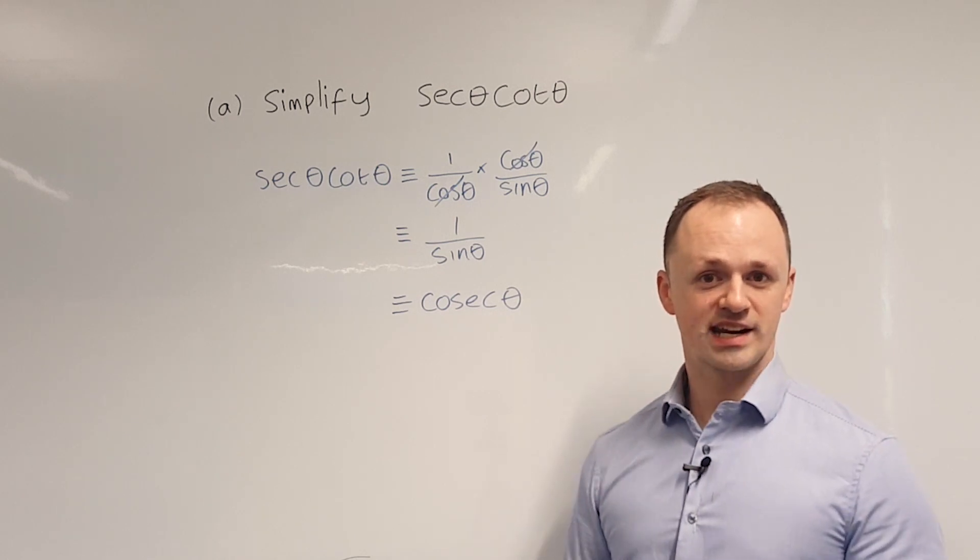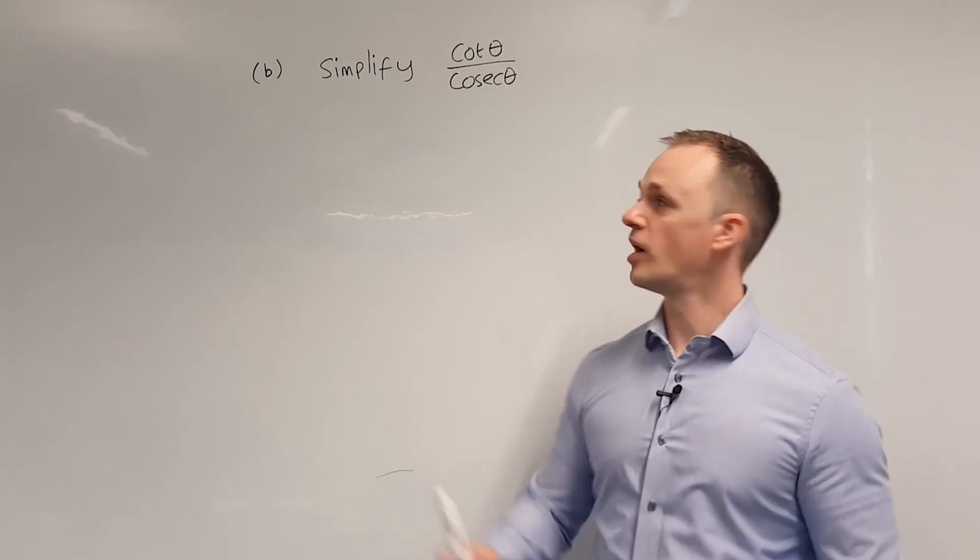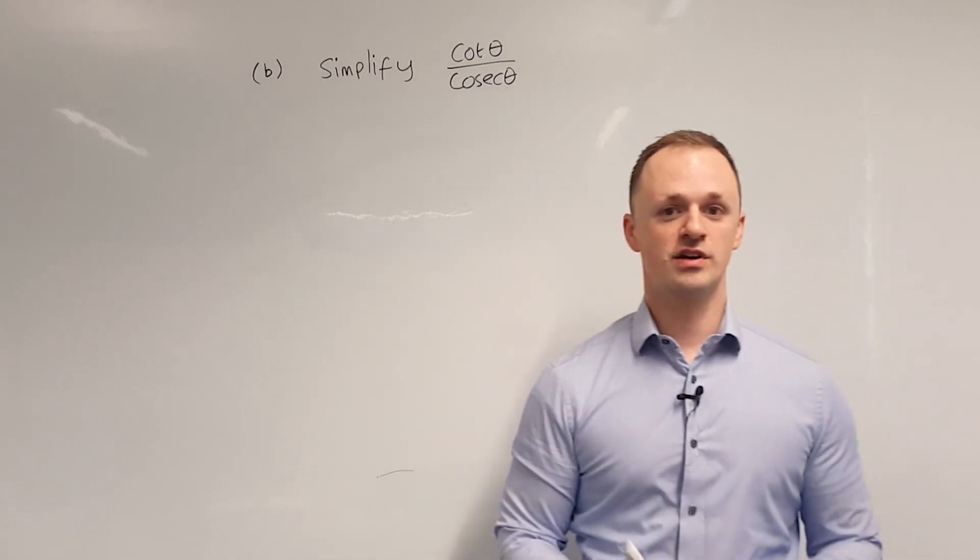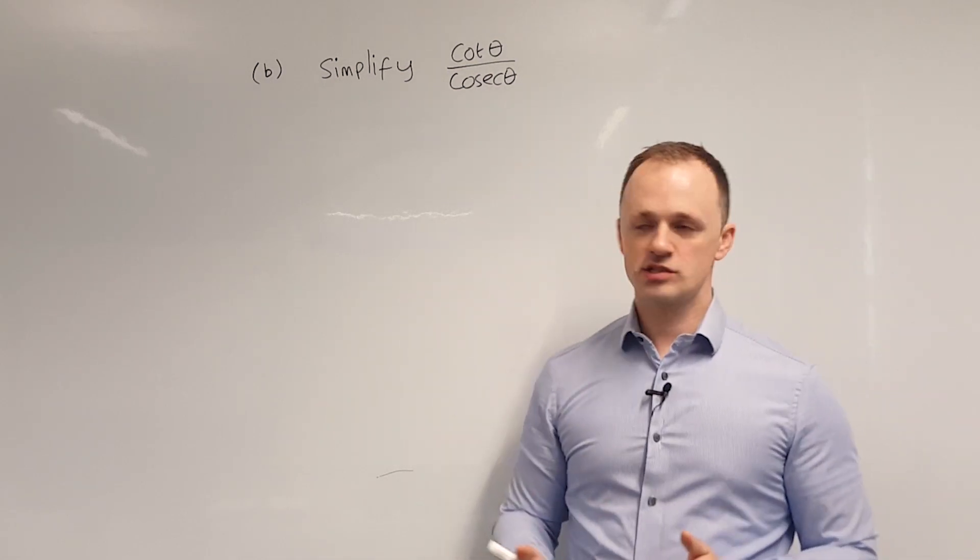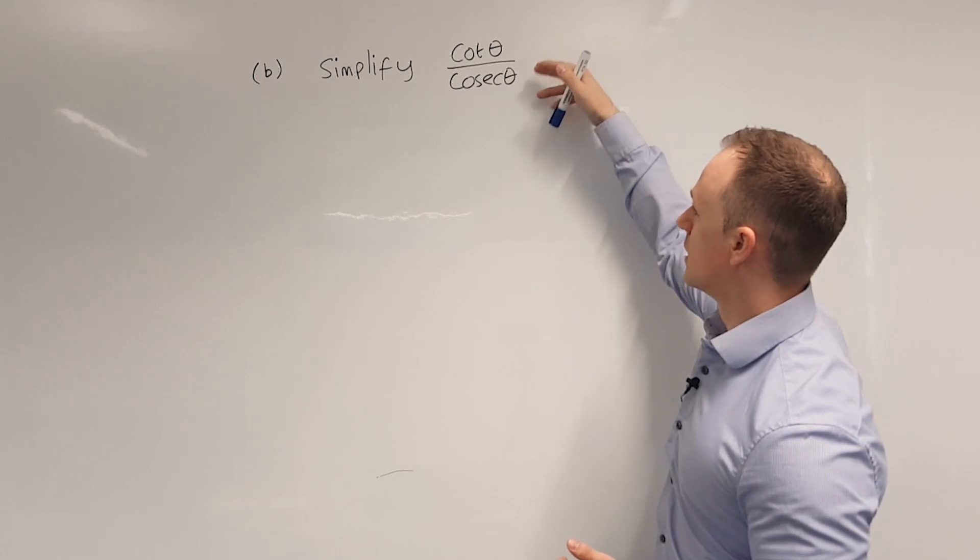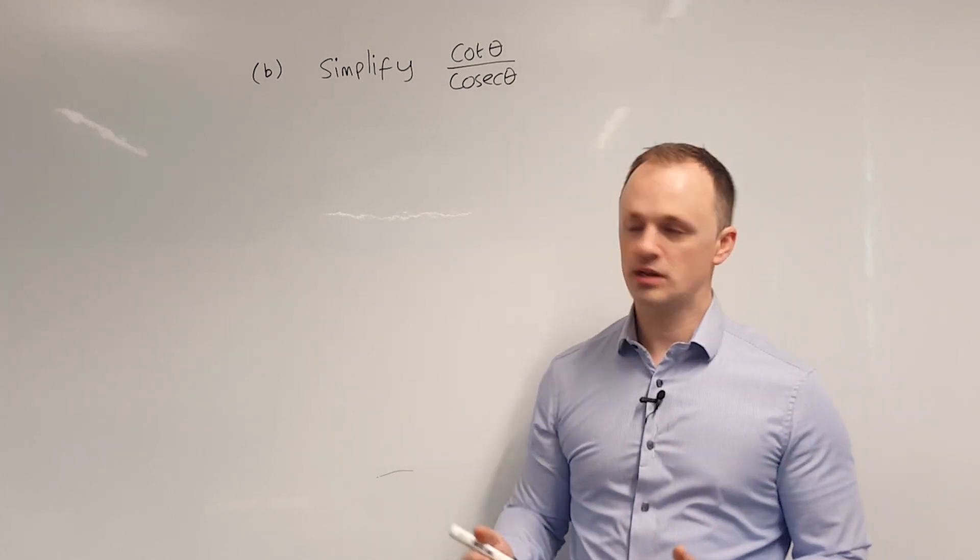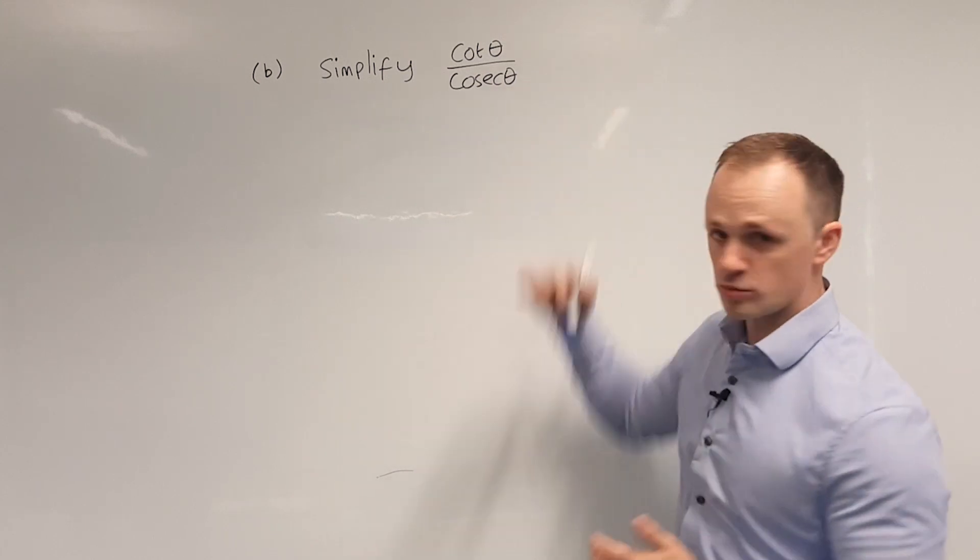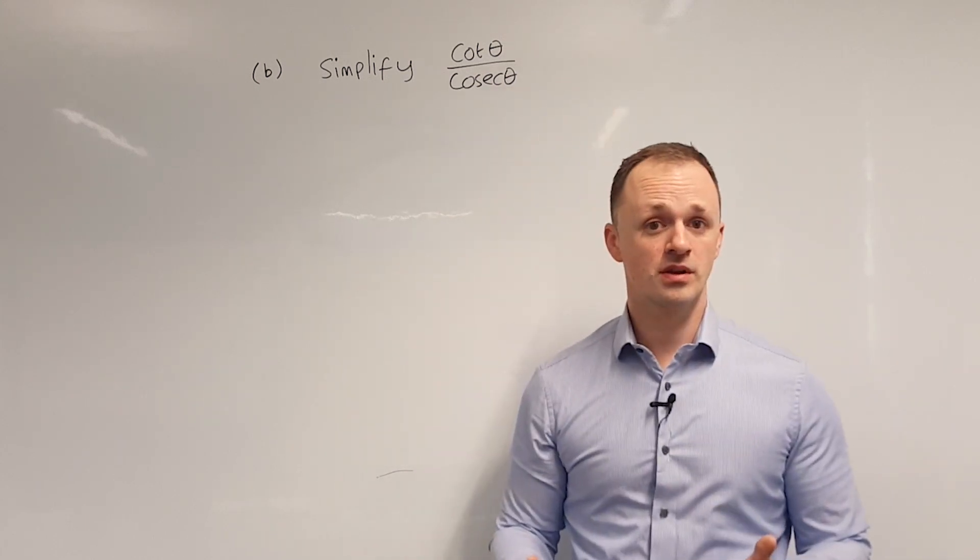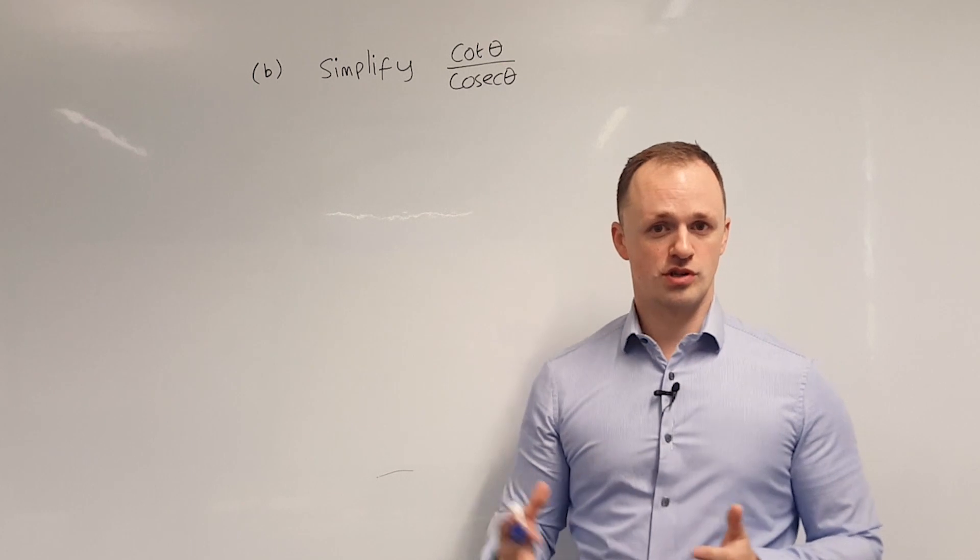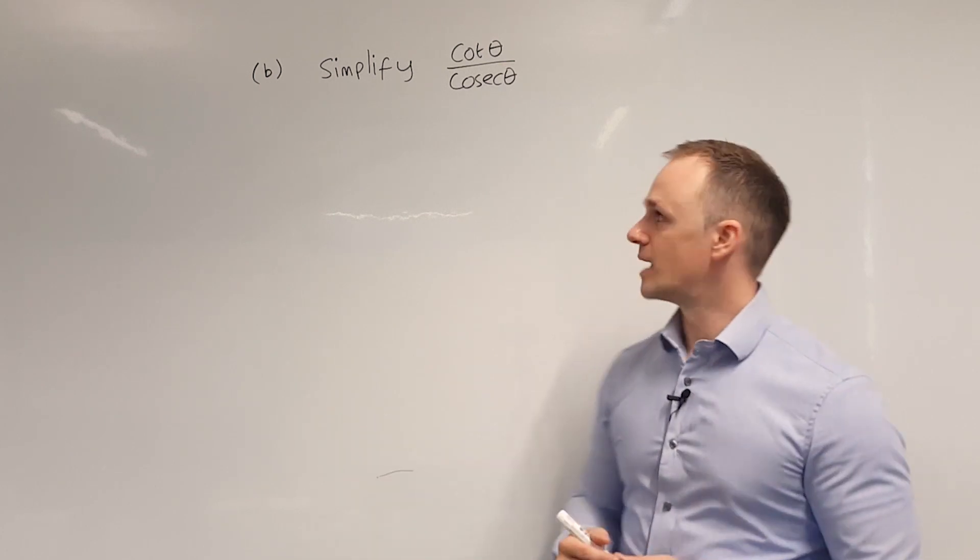Let's have a look at a second example. Okay part b we've got cot theta over cosec theta. Now one way we could approach this is to take cot theta and cosec theta and write them in terms of cos theta and sin theta. If we did that we'd end up with a double deck of fraction which we could simplify but I'm going to show you a different approach to this question which may get you there in less steps.